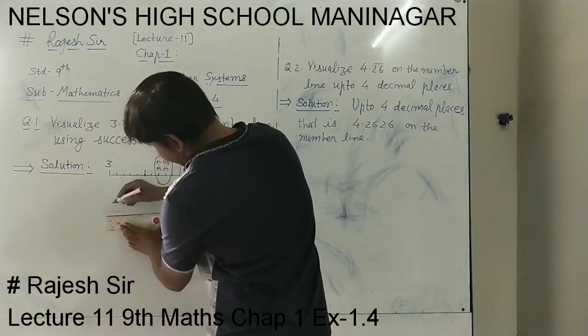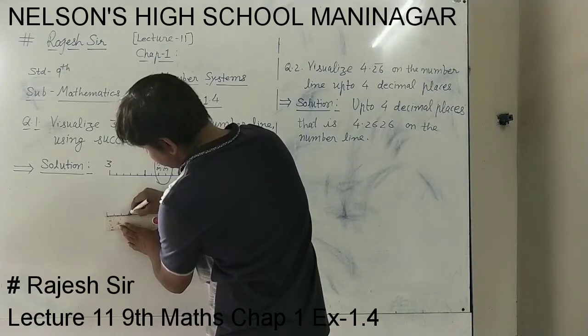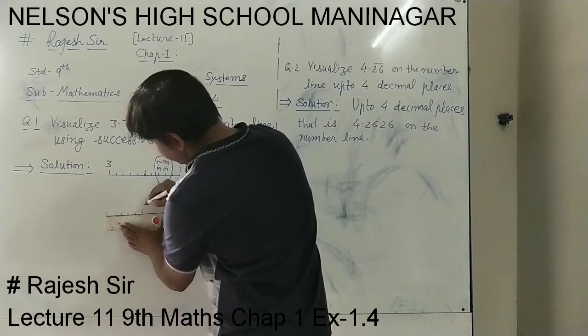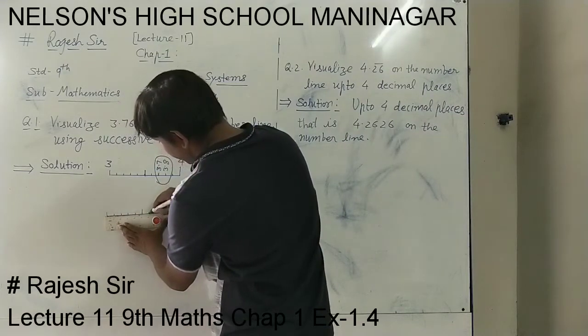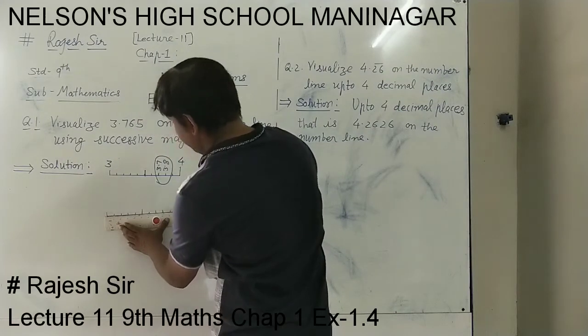The given number is between 3.7 and 3.8, so we put a magnifying glass here. It will look larger, and we have to show that larger part below it. This is 3.7, so again drawing a 10 cm line segment and making marks on every centimeter.